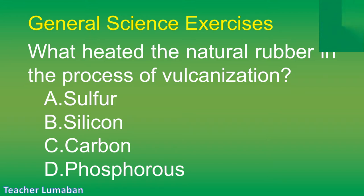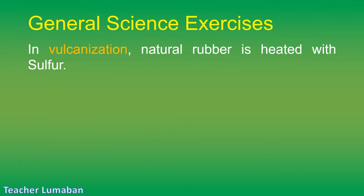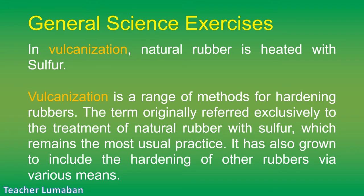The correct answer is Letter A: sulfur. In vulcanization, natural rubber is heated with sulfur. Vulcanization is a range of methods for hardening rubbers. The term originally referred exclusively to the treatment of natural rubber with sulfur, which remains the most usual practice. It has also grown to include the hardening of other rubbers via various means.